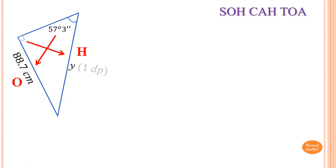So we label Y as H. We have O and H, so we use SOH — S is for sine. Sine of 57 degrees and 3 minutes is equal to O over H, which is 88.7 over Y.